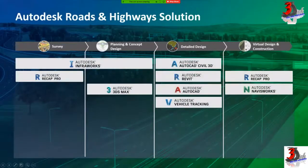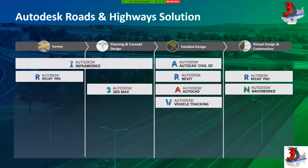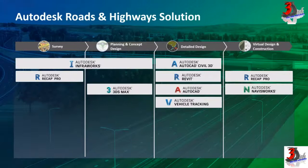There are several Autodesk software tools that carry their own functions and capabilities across infrastructure design phases. In the survey stage, InfraWorks and ReCap Pro are used — ReCap stands for Reality Capture, working with point clouds from laser scans. For planning and concept design, InfraWorks and 3ds Max are involved, where 3ds Max handles 3D modeling, animation, rendering, and visualization. For detail design, we have Civil 3D, AutoCAD, and Vehicle Tracking. For virtual design and construction, ReCap Pro and Navisworks are used. Today, the focus will be on Civil 3D software.